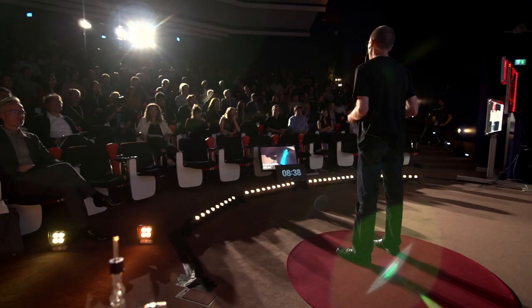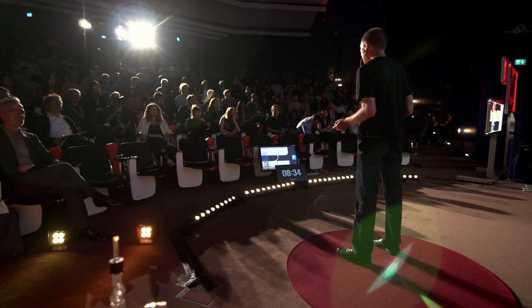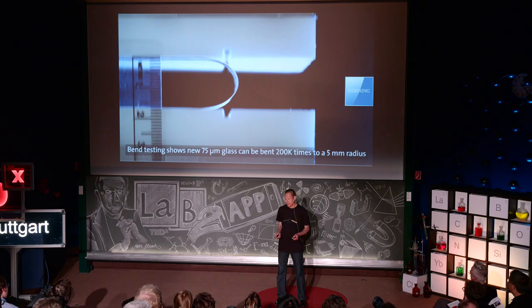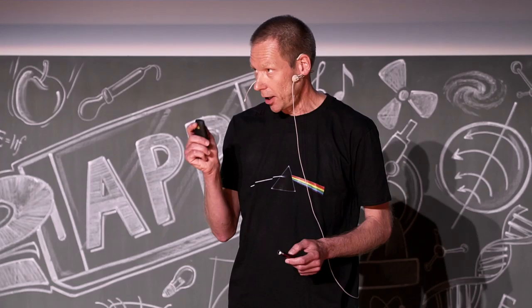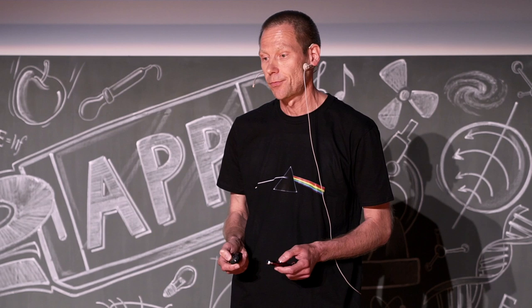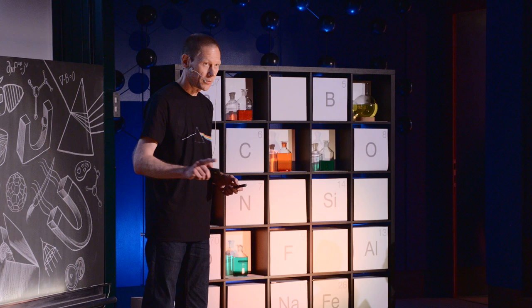The first question we have to address is: what are we going to use as the flexible substrate? Now, it turns out that glass can be made flexible, but it requires the glass to be extremely thin, which causes all kinds of problems and challenges both in the manufacturing and in the handling of the glass. So the display industry has taken a different path.